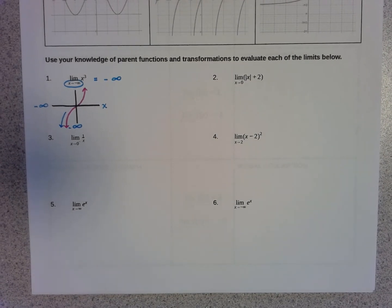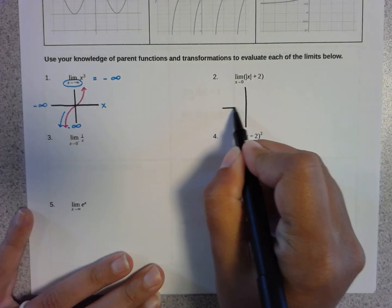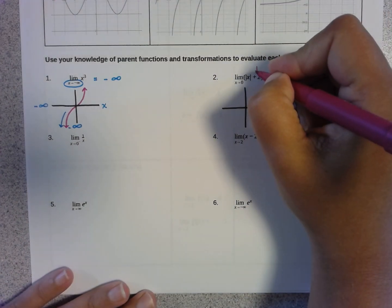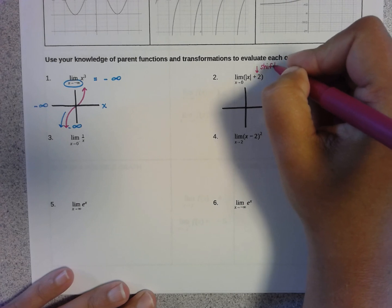For problem number two, it says find the limit as x approaches zero of the absolute value of x plus two. Now again, I'm going to use my knowledge of parent functions here. I know that an absolute value function is shaped like a v and that this plus two is going to shift my graph up two spaces.